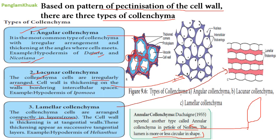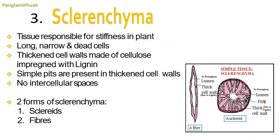Sclerenchyma is the tissue responsible for stiffness (hardness) in plants. The cells are long and narrow, and all sclerenchyma cells are dead. They have very thick cell walls made up of cellulose with lignin deposition, making them very strong. Between two adjacent cells there are small holes called simple pits, formed due to the absence of secondary cell wall deposition. Intercellular space is absent in sclerenchyma cells.